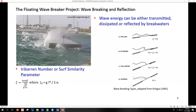Breakwaters can transmit, dissipate, or reflect wave energy. The aim is to minimize transmission. Reflection is often not ideal, since this makes the sea state in front of the breakwater more energetic and chaotic. Hence, ideally, a breakwater maximizes dissipation. The extent to which wave energy is dissipated by breaking, as opposed to being reflected back offshore, can be determined by the Iribarren number. Ideally, a breakwater functioning by inducing dissipation through breaking would have an Iribarren number below 2.